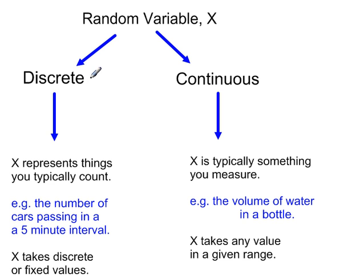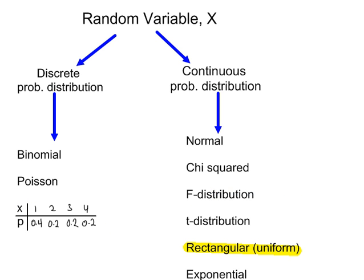Discrete variables are things you typically count, and continuous variables represent things that you typically measure. Here are some examples of discrete and continuous probability distributions, and this is the one that we're looking at now.